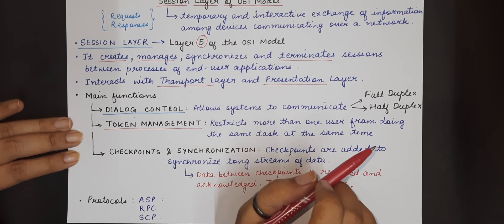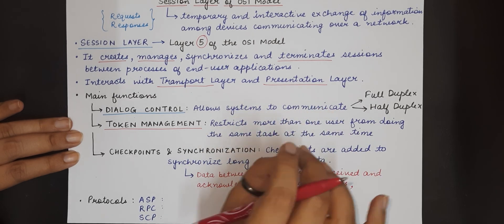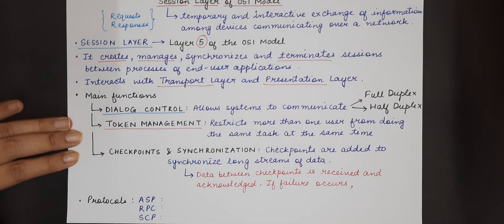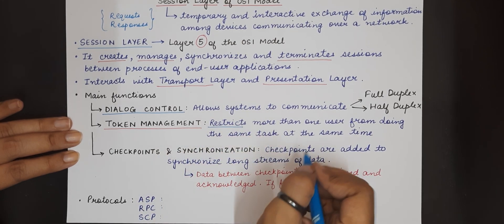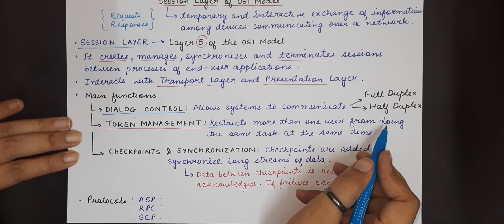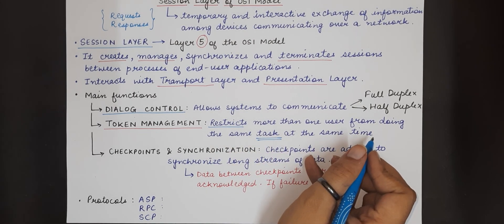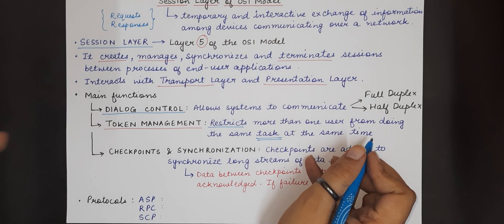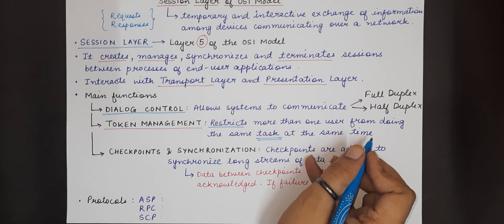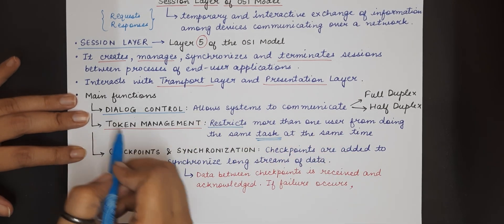No more than one machine is able to perform the same operation at the same time. So the session layer restricts or it limits the number of hosts or machines that can perform the same task at the same time. So only the machine that has the token will be allowed to perform the operation. Other machines will have to wait or other systems that are interacting will have to wait unless and until they get the token in their turn.